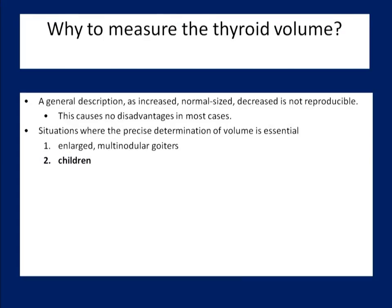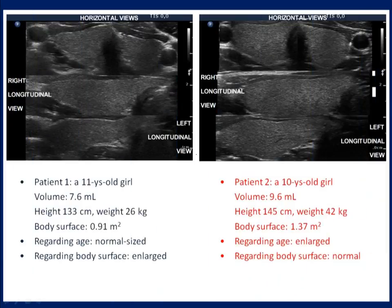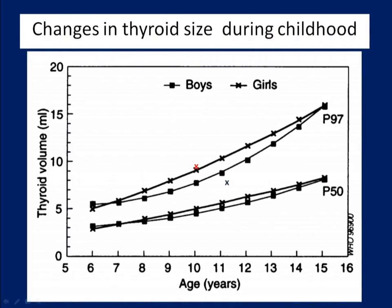The thyroid increases with age and body mass. The diagnosis of a diffuse goiter can be made exclusively on volume determination in children. The horizontal and longitudinal views of the thyroid are presented in two children. Although the younger child has a larger thyroid, it is impossible to decide whether the thyroids are normal or increased. The 50th and 95th percentiles are given in this figure. The age-volume curve has relevance in epidemiological studies but has only limited relevance in the differential diagnosis of a given patient.